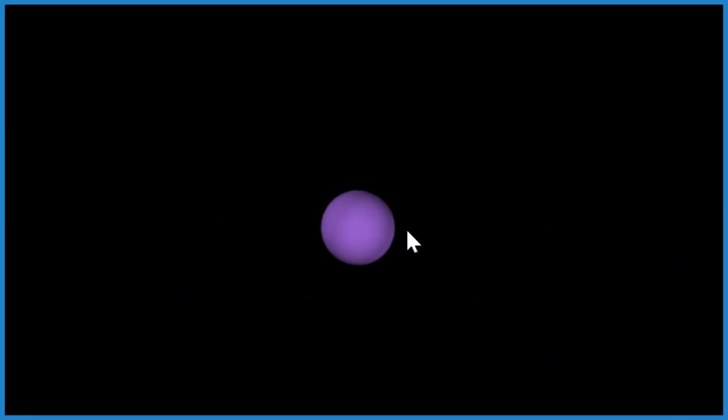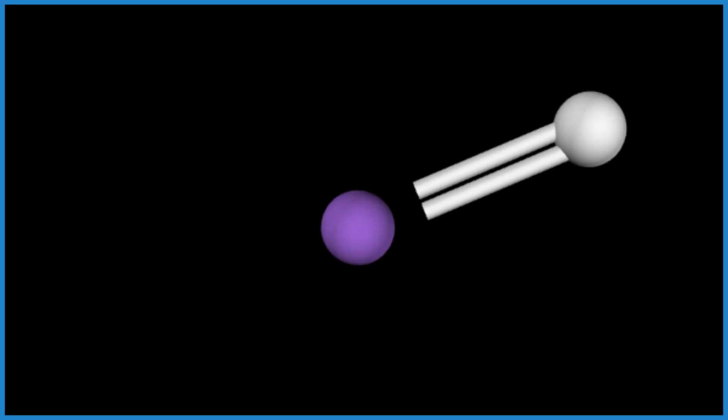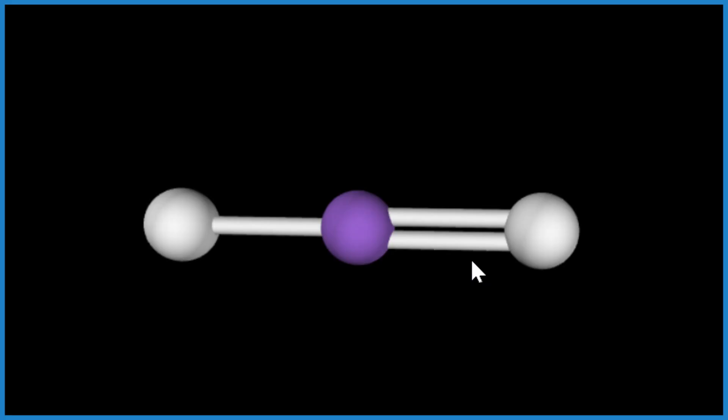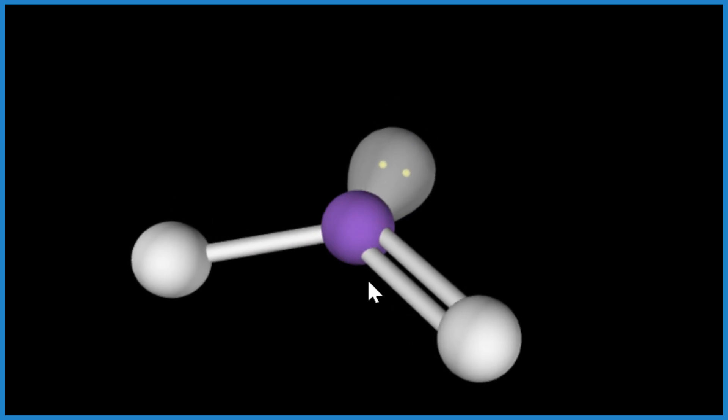So this is the central oxygen. Remember we had a double bond and a single bonded oxygen right here. And this is linear, but that lone pair, let's add that lone pair because it occupies space and look, it pushes everything down.